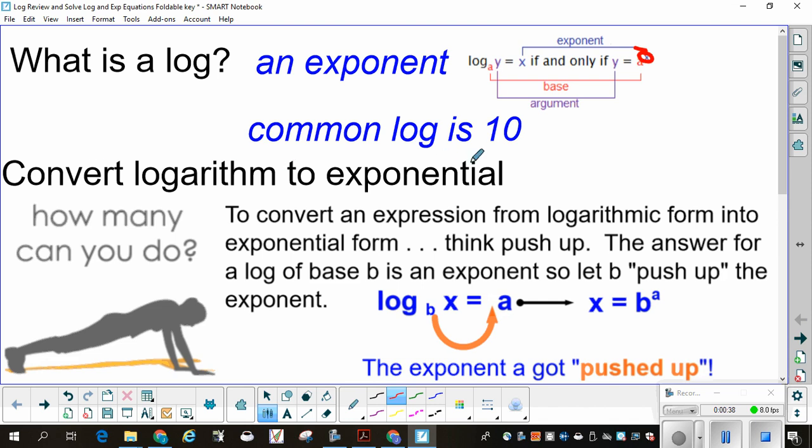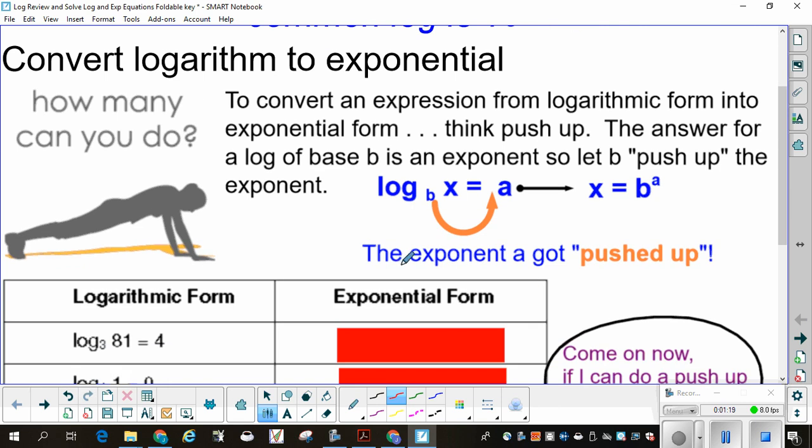We're going to convert logarithms to exponentials. Sometimes when you do that, it's easier to see what answer you're looking for. To convert an expression from logarithmic form into exponential form, think push-up. The answer for a log of base b is an exponent. So let b, the base, push up the exponent to its superscript spot. I have log base b of x equals a. b is going to come underneath and push the a up. The exponent got pushed up.